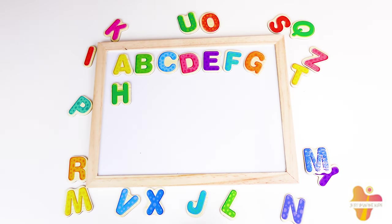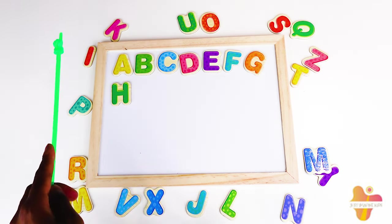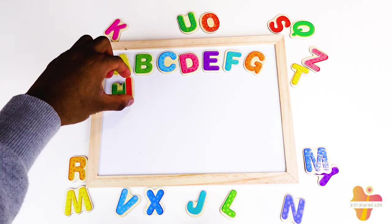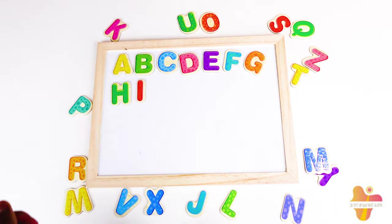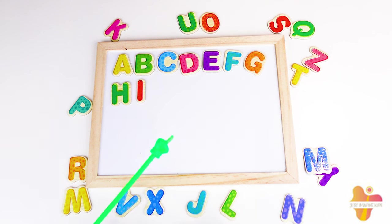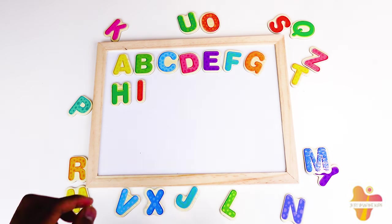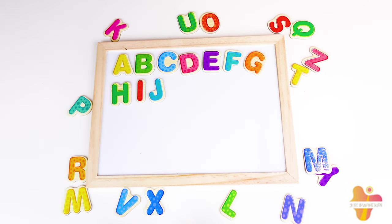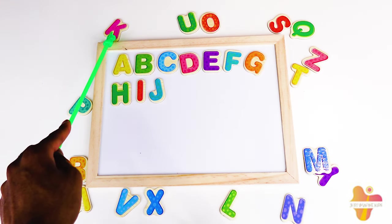Then we have Big I. Oh, here is Big I! The next one we need is Big J. Is this Big J? No. Oh, this is Big J! And next we need Big K. Oh, found Big K!